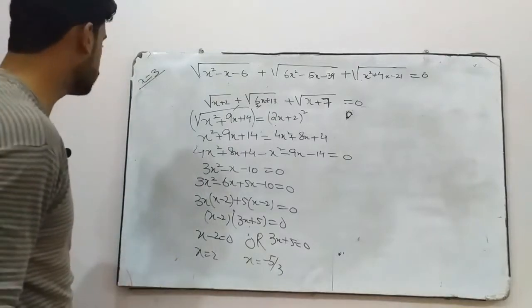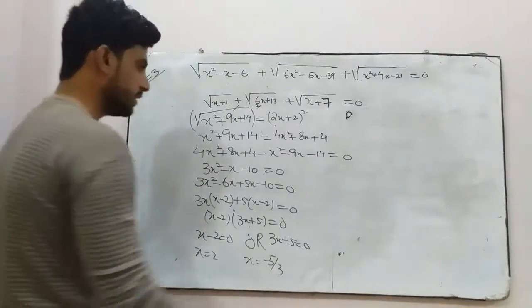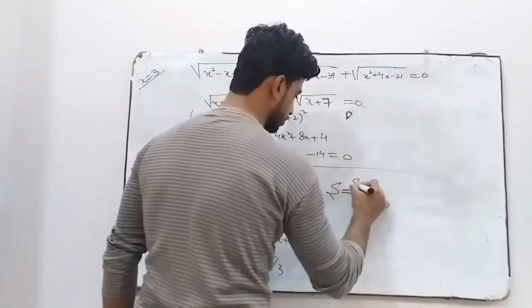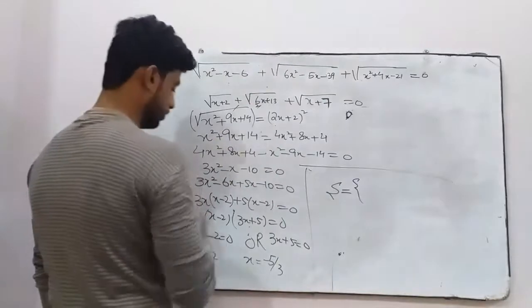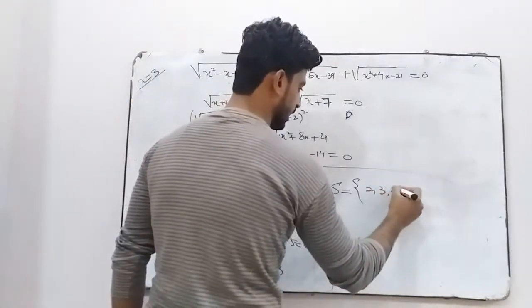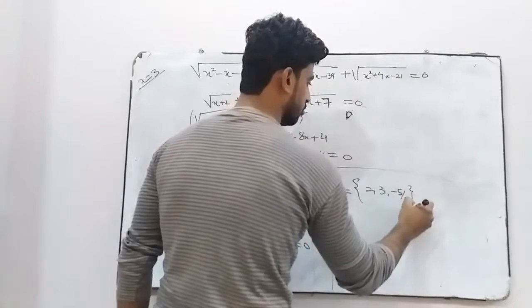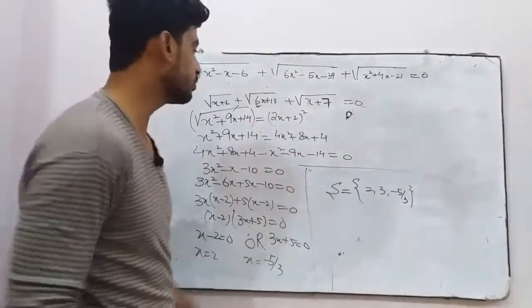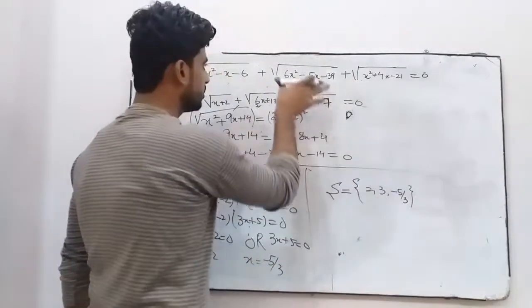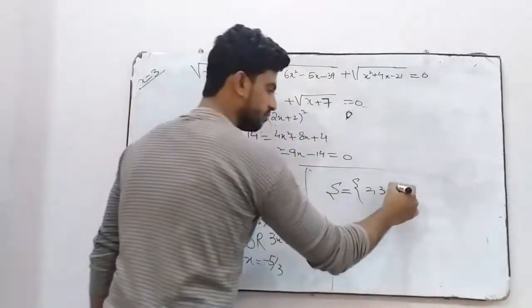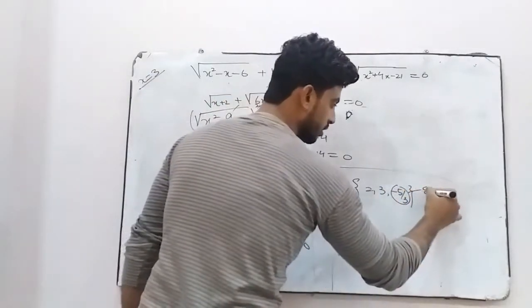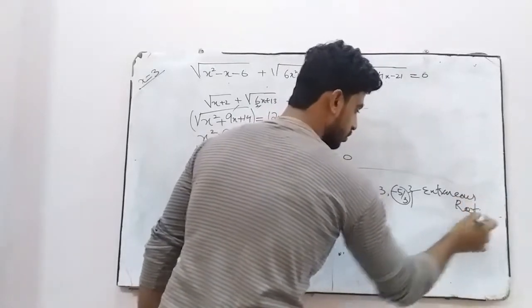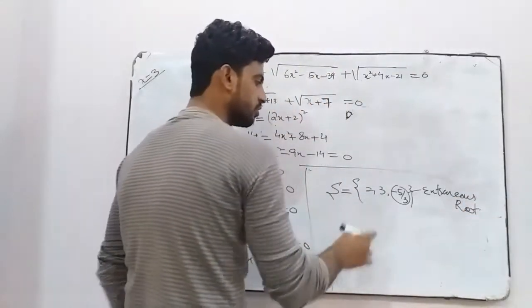We have found two more roots. Our solution set is x equals 2, x equals 3, and x equals negative 5 upon 3. However, if we verify by substituting these roots back into the original equation, we find that negative 5 upon 3 does not satisfy the equation — so it is an extraneous root.